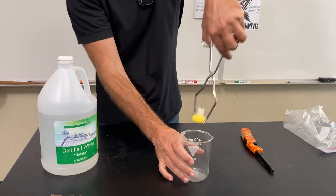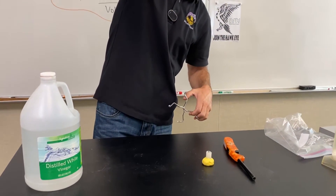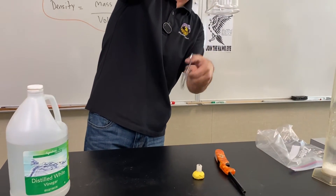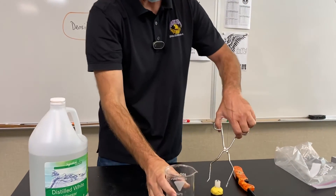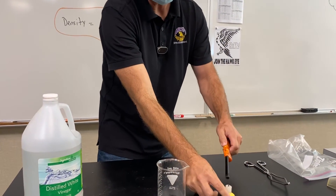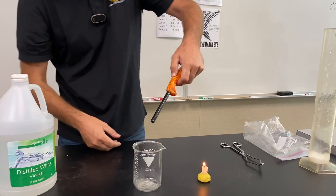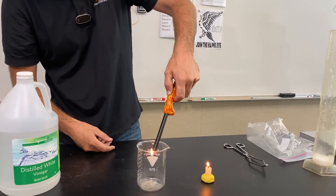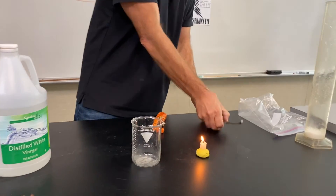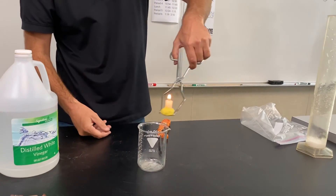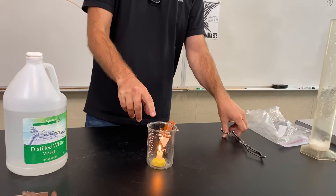What if I take the candle out and dump the invisible gas — that's not carbon dioxide now. If I put it right side up and relight the candle, will it still work? Look — it works again! So there was actually invisible carbon dioxide gas inside here, and that was preventing the fire from happening.